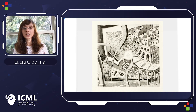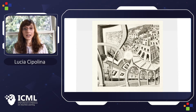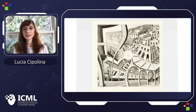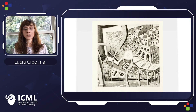This is Escher's work called Print Gallery. It is a lithography that Escher made in 1956, and he left the center blank for unknown reasons. The content in the center has been a mystery for 65 years. Our aim is to use machine learning to complete the center while respecting the mathematical structure behind the painting.